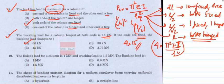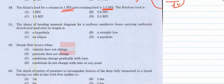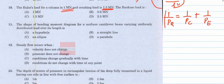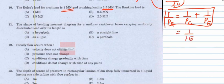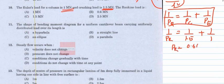Question 9: The Euler's load for a column is 1 MN and the crushing load is 1.5 MN. Using Rankine's formula: 1/P_R = 1/P_C + 1/P_E = 1/1.5 + 1/1. Solving this gives P_R = 0.6 MN. The answer is option B.